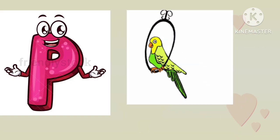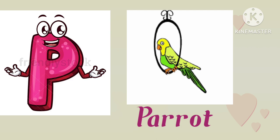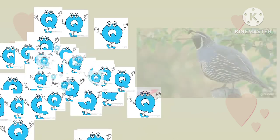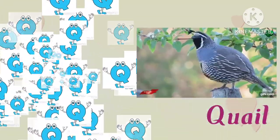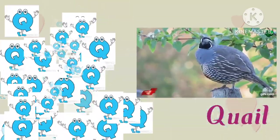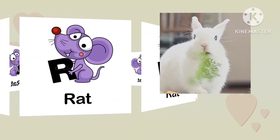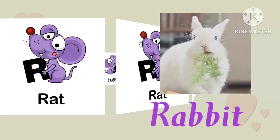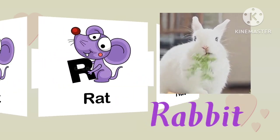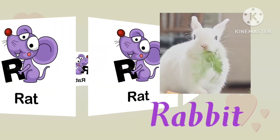P. P is for perot. Q. Q is for quail. R is for rabbit.